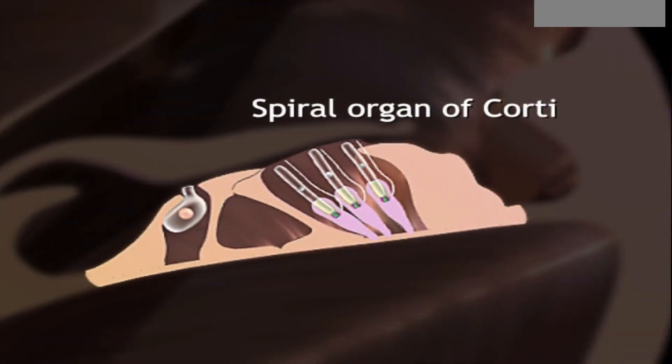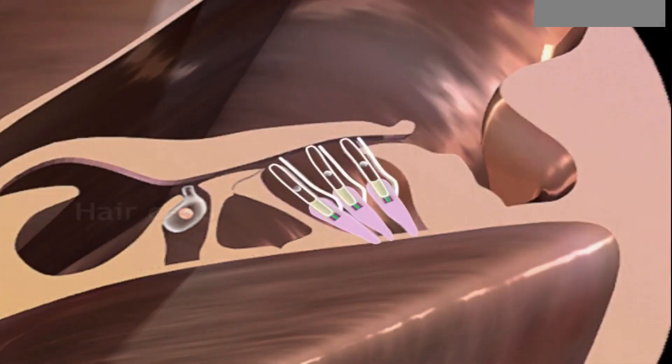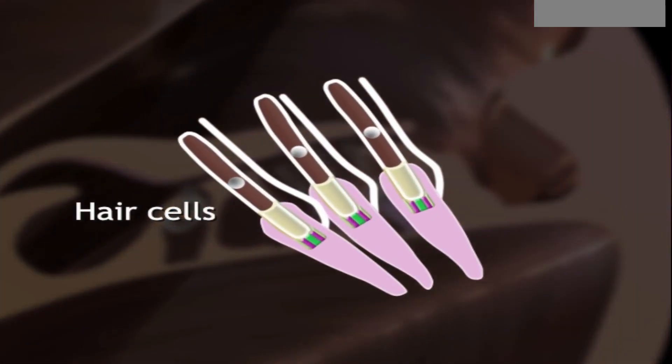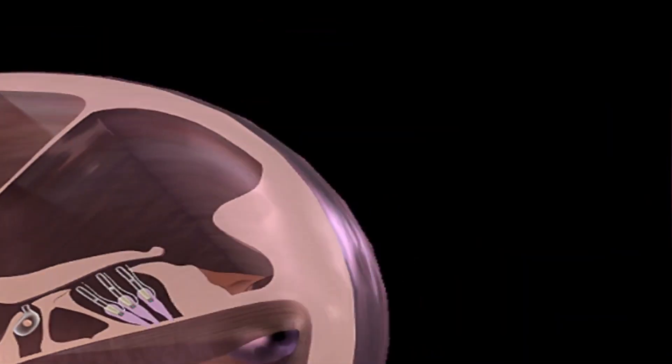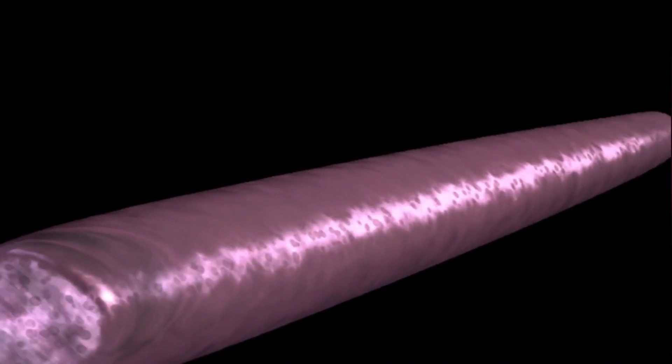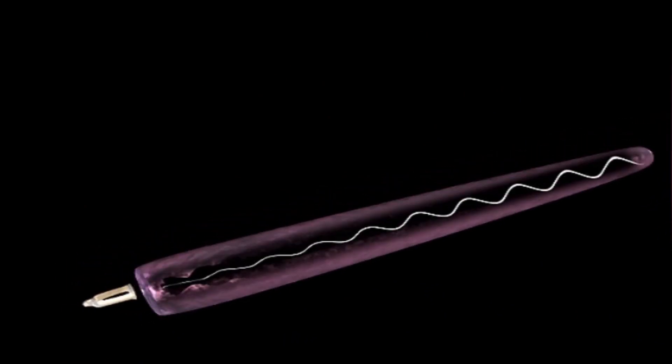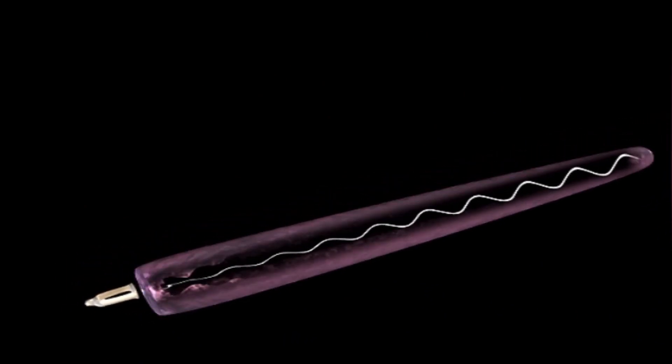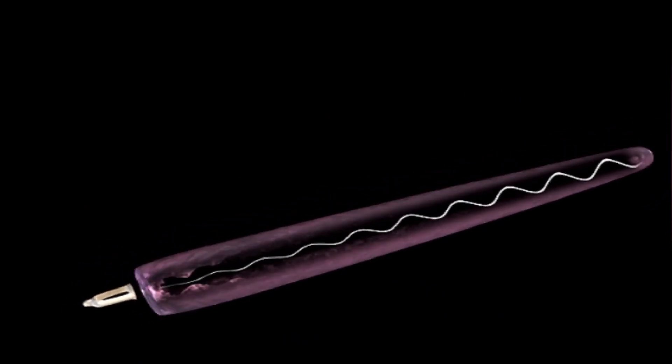The cochlear part involves a hair cell structure. These hair cells generate an electric impulse, which is why we are able to hear sound.